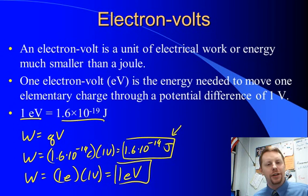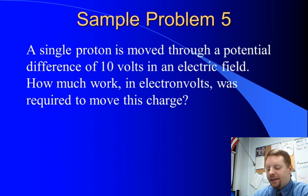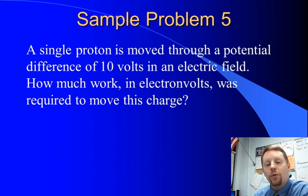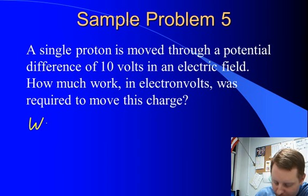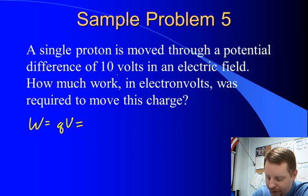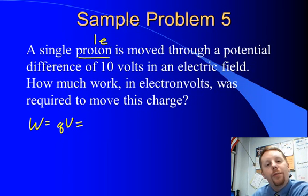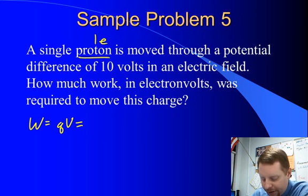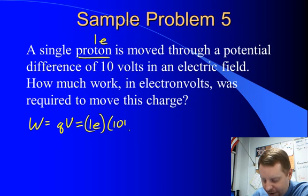A single proton is moved through a potential difference of 10 volts in an electric field. How much work in electron volts was required to move this charge? Work equals charge times potential difference. The charge on a proton is one elementary charge, or 1.6 times 10 to the minus 19 coulombs. Because we want the answer in electron volts, we leave it as 1 elementary charge times 10 volts, which gives us 10 electron volts.